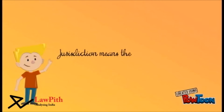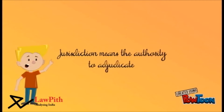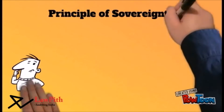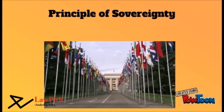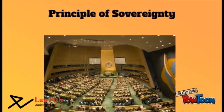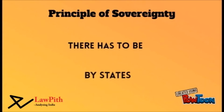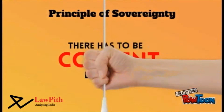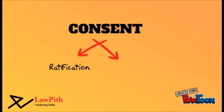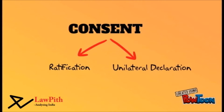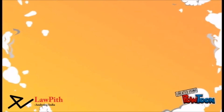Jurisdiction means the authority to adjudicate. The international legal framework is based on the idea of sovereignty of states, which simply means that for laws and decisions to be binding upon a state, there has to be consent. Consent can be shown in two major ways: one, ratification of a statute, and second, through unilateral acts such as declarations where a state expressly accepts the court's jurisdiction.